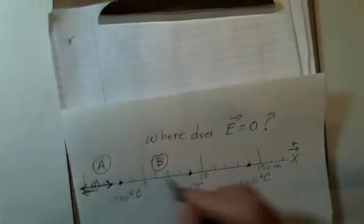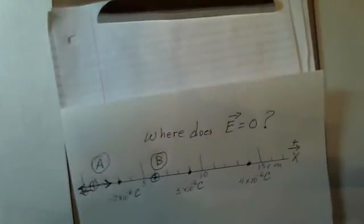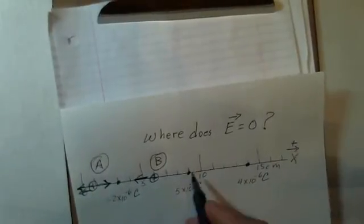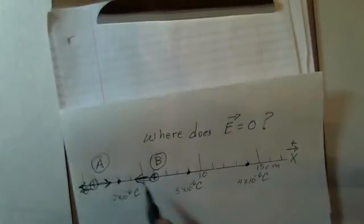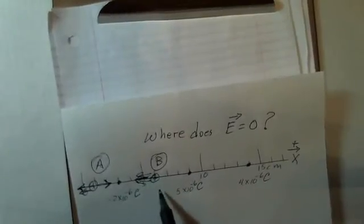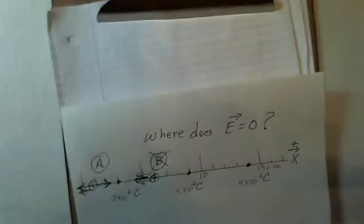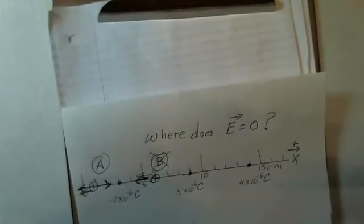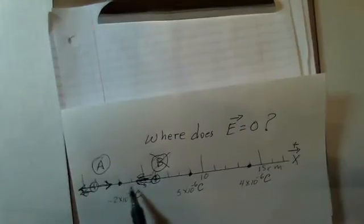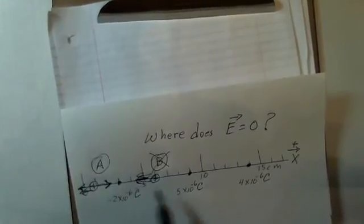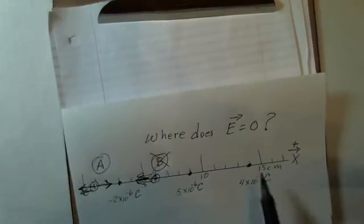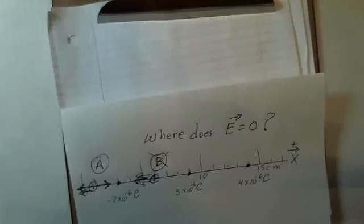Let's go to region B. If I put a positive charge here, we're going to be attracted to the negative 2 charge, repelled by the plus 5 charge, and repelled by the plus 4 charge. We've got three arrows to the left. It's impossible for the electric field to equal 0. All three electric fields at this position point to the left.